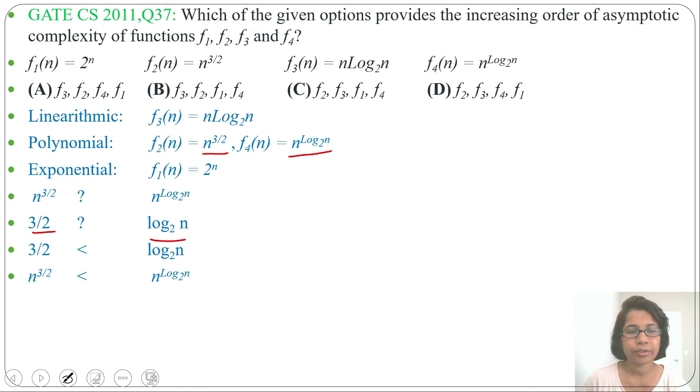Let's write all the functions according to its increasing order. First is linearithmic n log n base 2, that is f3. Next is n power 3 by 2, that is f2. Next is n power log n base 2, that is f4. Next is 2 power n, that is f1. Now check which option contains f3, f2, f4, f1.